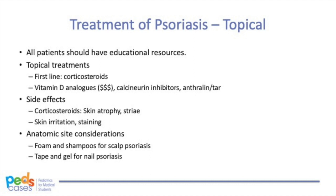Topical treatments are not free from side effects. Long-term topical steroid therapy can cause skin atrophy and striae, while other topical therapies may be associated with skin irritation or staining. As psoriasis is a systemic condition, topical therapies can be tailored to treat specific body sites. For instance, scalp psoriasis can be addressed using foam or shampoo formulations of topical corticosteroids. Nail psoriasis can be difficult to treat, as corticosteroids must penetrate the nail plate. While injected corticosteroids are painful, corticosteroids in tape and gel formulations can be attempted to address nail lesions.